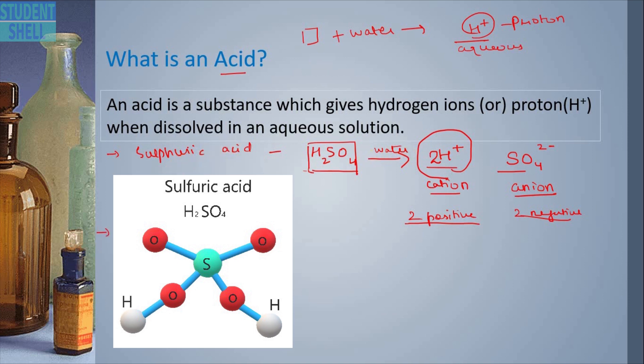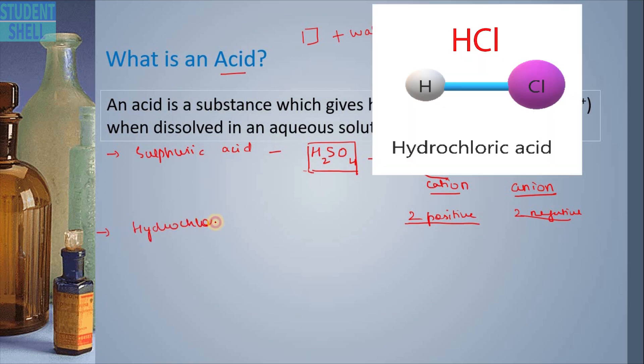Let me take another very important one, that is hydrochloric acid, represented as HCl. When this is dissolved in water it is giving me 2 kinds of ions. Of course one is cation, one is anion. It is giving me H+, that is a proton, and Cl-. Now since I have this I can call that it is an acid.